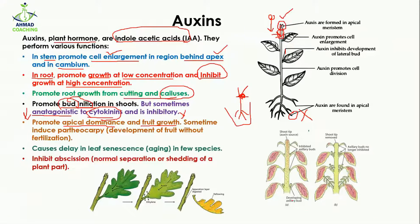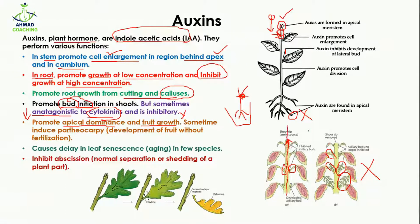Auxins also promote apical dominance and fruit growth. Apical dominance means they stimulate the growth of the main shoot or main stem. If auxins are absent, secondary shoots form. But if only the main stem increases in size with no secondary shoots, that is apical dominance.